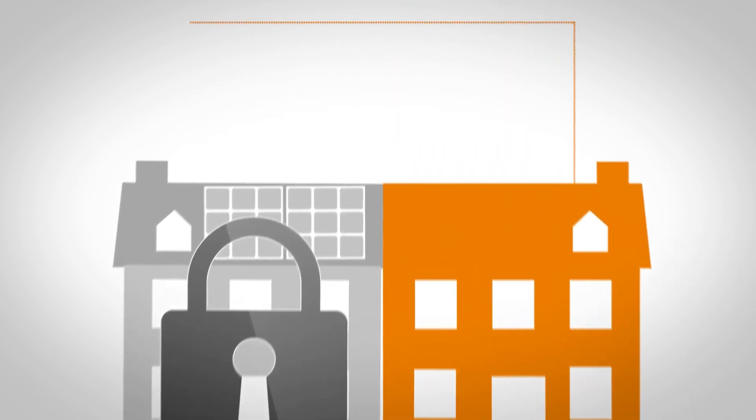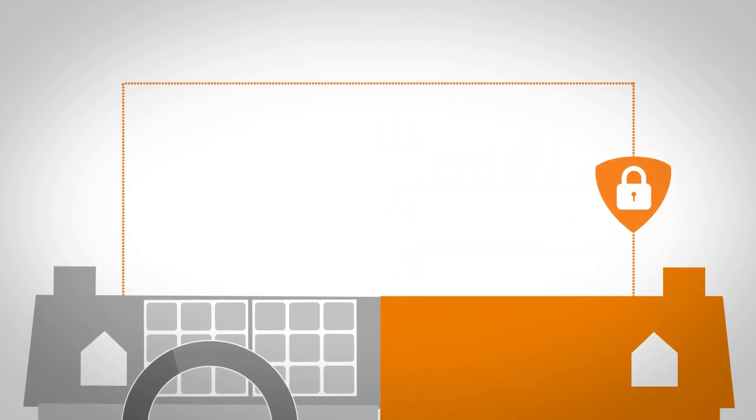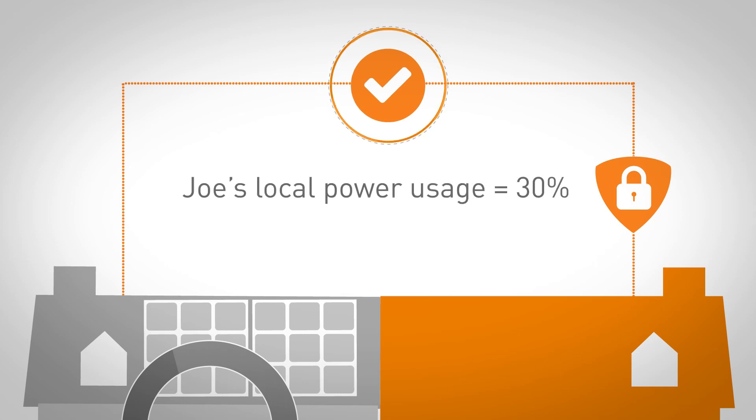The solution confirms that Joe is keeping up his end of the bargain using the promised system capacity. It also keeps Joe's specific consumption details private.